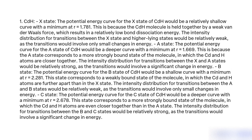CDH A state: The potential energy curve for the A state of CDH would be a deeper curve with a minimum at R equal to 1.669. This is because the A state corresponds to a more strongly bound state of the molecule in which the CD and H atoms are closer together. The intensity distribution for transitions between the X and A states would be relatively strong, as the transitions would involve a significant change in energy.